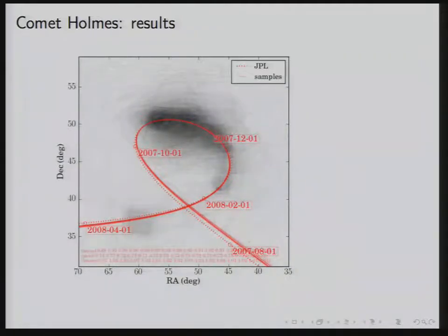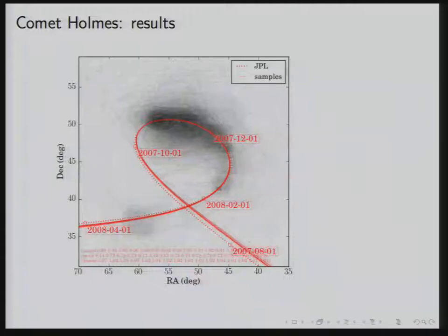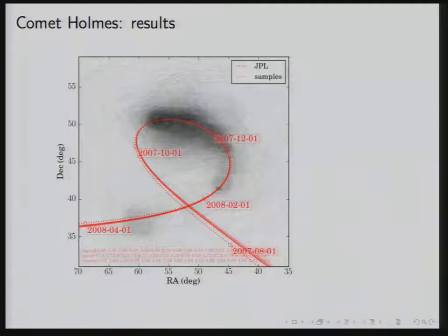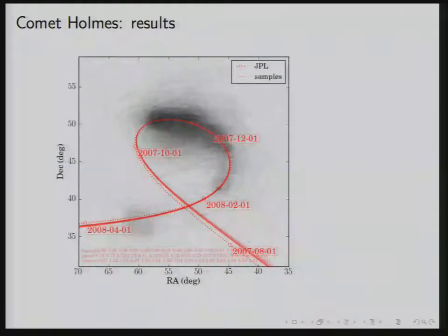We never actually looked in any of the images to see if there was a comet there — at no step did we ever do that. We would do better if we did. But really this was a question about how do you model data probabilistically, especially when you don't believe anything in particular about the data.